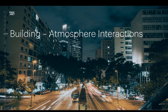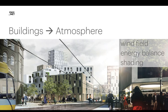Let's now have a look at building-atmosphere interaction. As I already said, these interactions are quite complex. Buildings shape the atmosphere — that's quite obvious. When thinking of a city, buildings are the most characterizing features. They deviate the wind field, alter the energy balance of the atmosphere, cast shading, etc. They have a huge impact on the atmosphere.